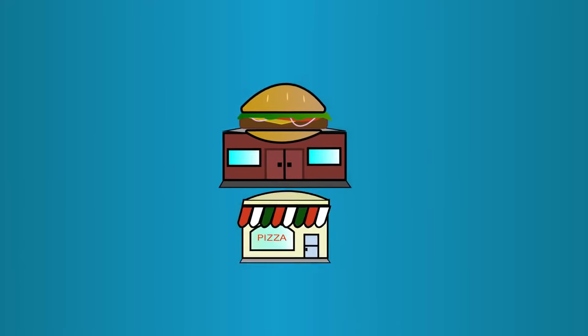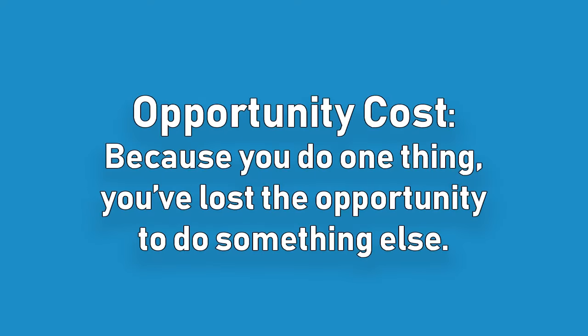Everyone can't have everything all at once. With every expressed preference, there exists a next best option—something you would have done if the first option wasn't available. This is called the opportunity cost. Because you do one thing, you've lost the opportunity to do something else.